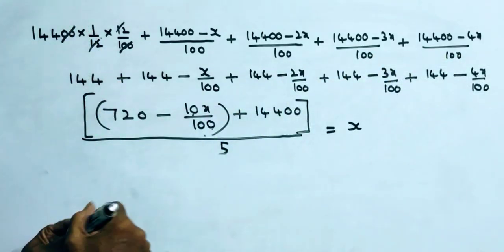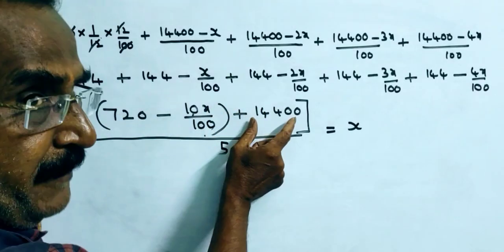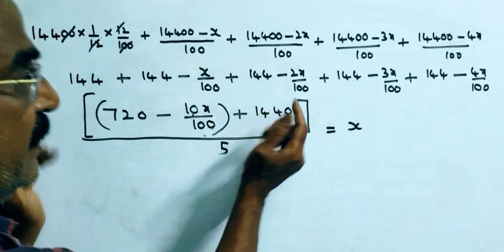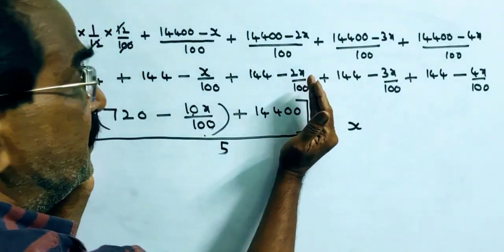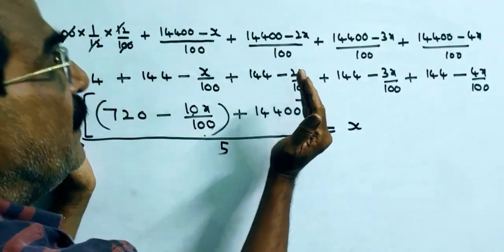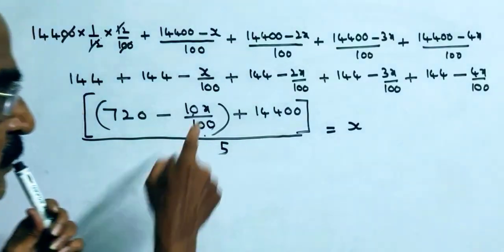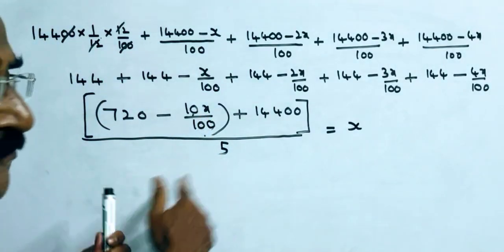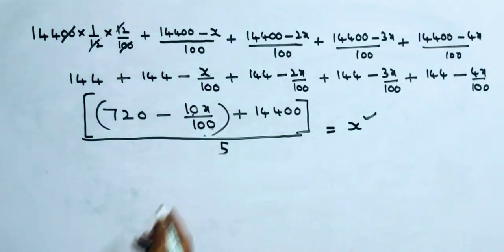This is the total amount payable by that person. He wants to pay this amount in five monthly installments. By dividing by five, we get the value of the monthly installment.